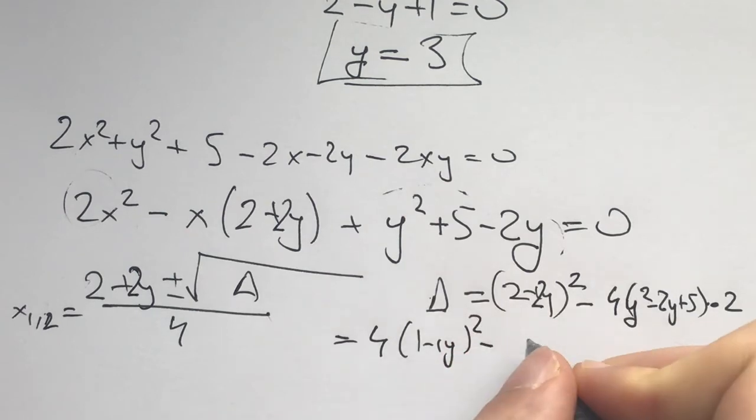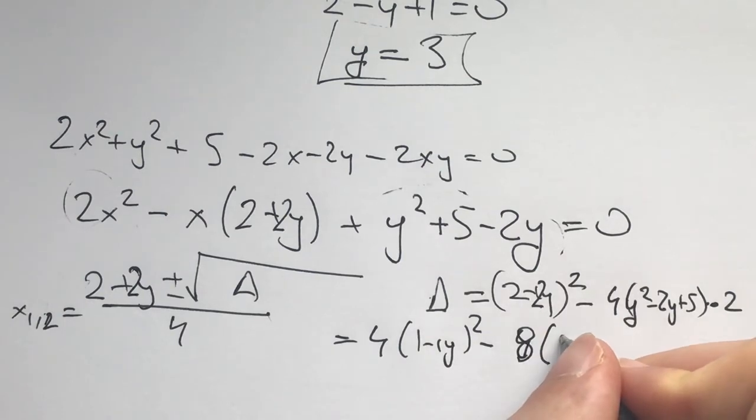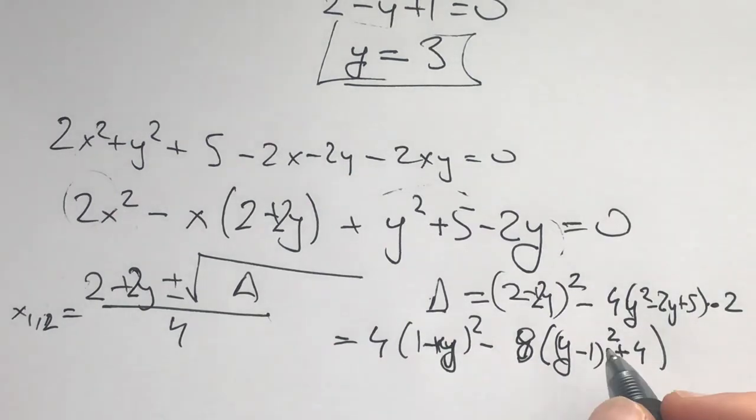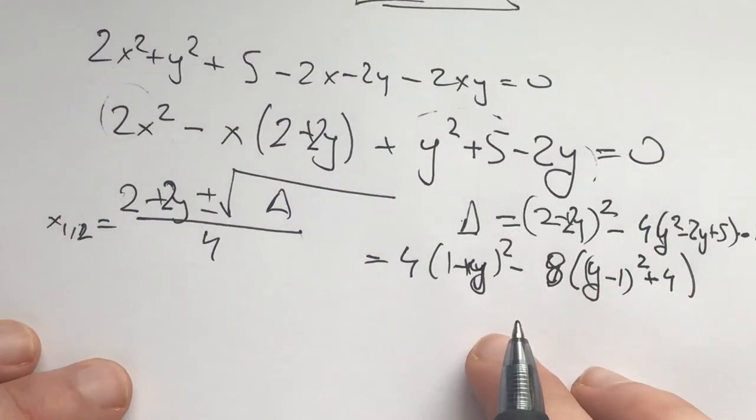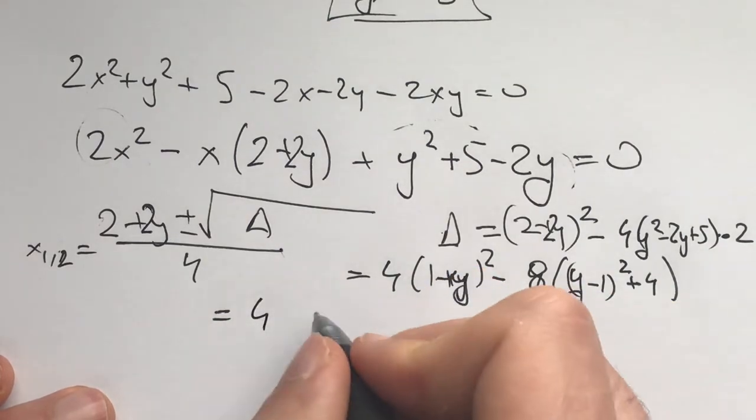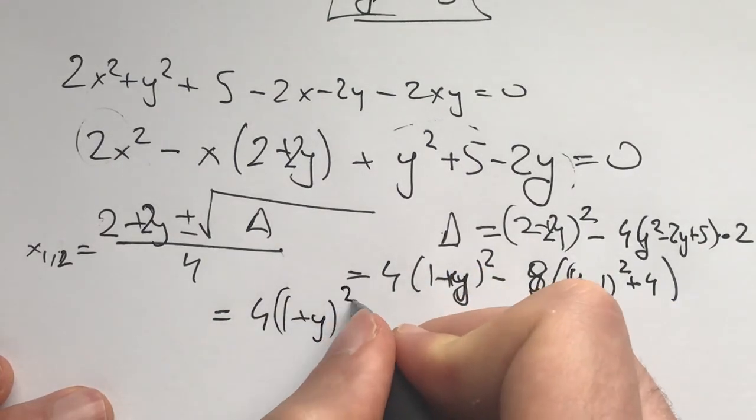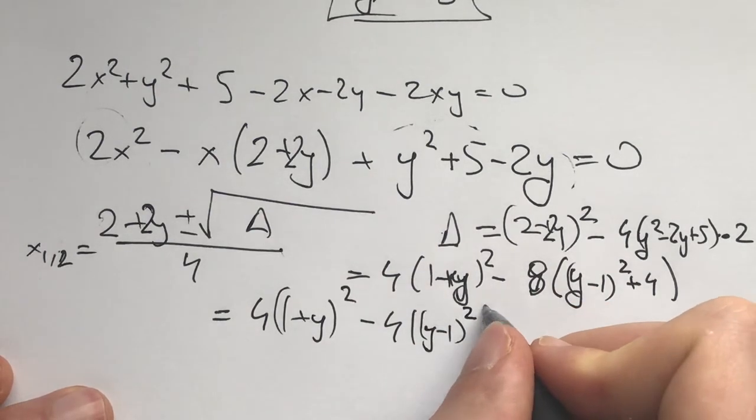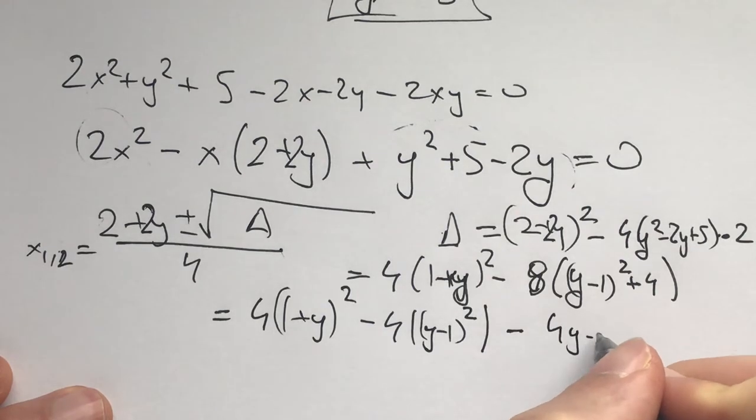So now this thing right here is going to equal 4(1 plus y) squared minus 8 times... I'll write actually 8 times what's this? This is (y minus 1) squared plus 4. I'm trying to write it in a way such that I can get rid of these y's quickly. There's nothing wrong about multiplying everything out. So this is 4(1 plus y) squared minus 4(y minus 1) squared minus 32.